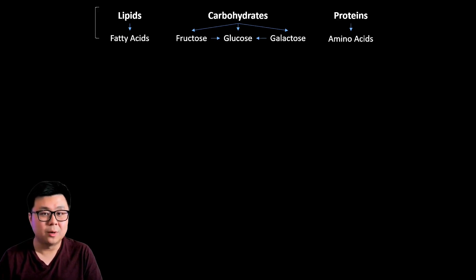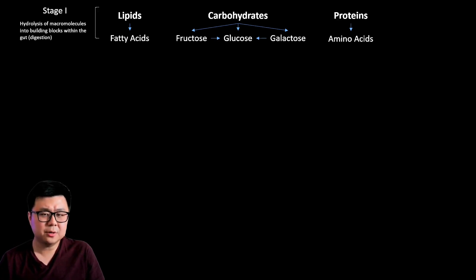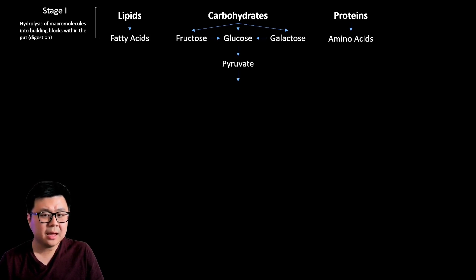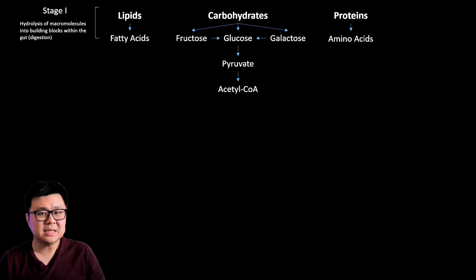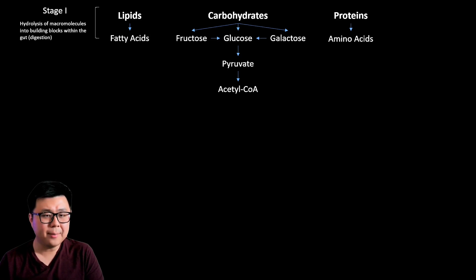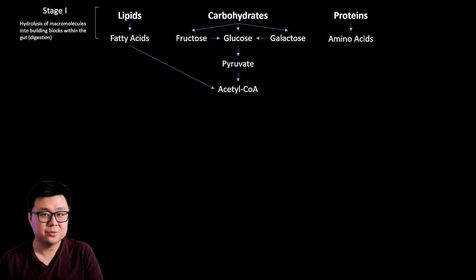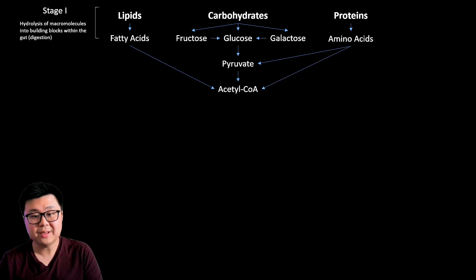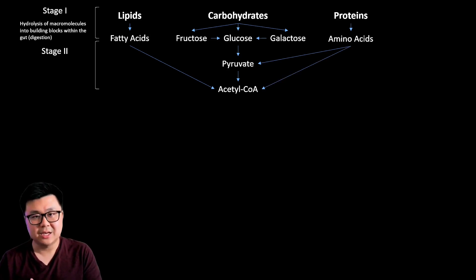Next, focusing on glucose: glucose gets converted into pyruvate, which then gets converted into acetyl-CoA. Acetyl-CoA is a very important compound because it forms a link between your inputs. Fatty acids from lipids can also be converted to acetyl-CoA, and amino acids can be converted into pyruvate and acetyl-CoA. This is the second stage — the creation of a common metabolic intermediate known as acetyl-CoA.